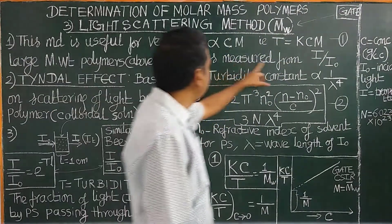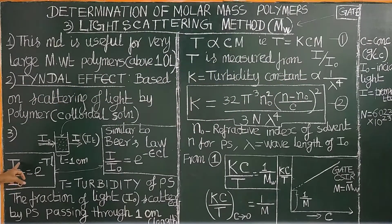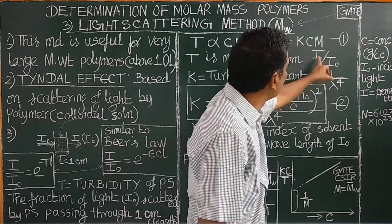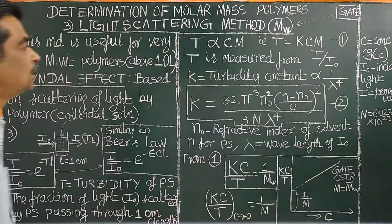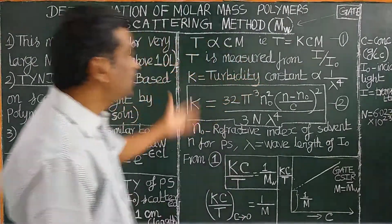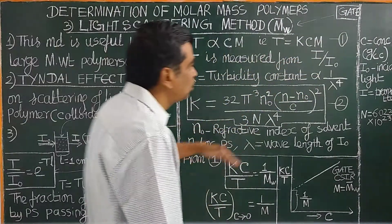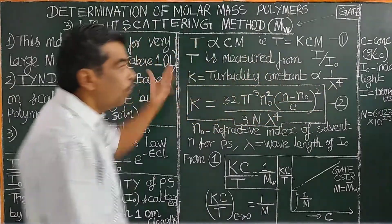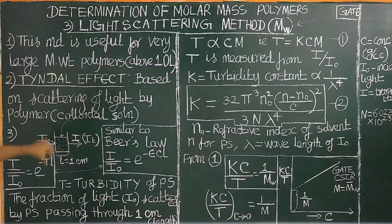K is the turbidity constant or proportionality constant. Turbidity T is measured from the ratio of the intensity of incident light to the intensity of scattered light — that is, i/i₀. K is inversely proportional to the fourth power of the wavelength of the incident light, where λ is the wavelength of incident light.